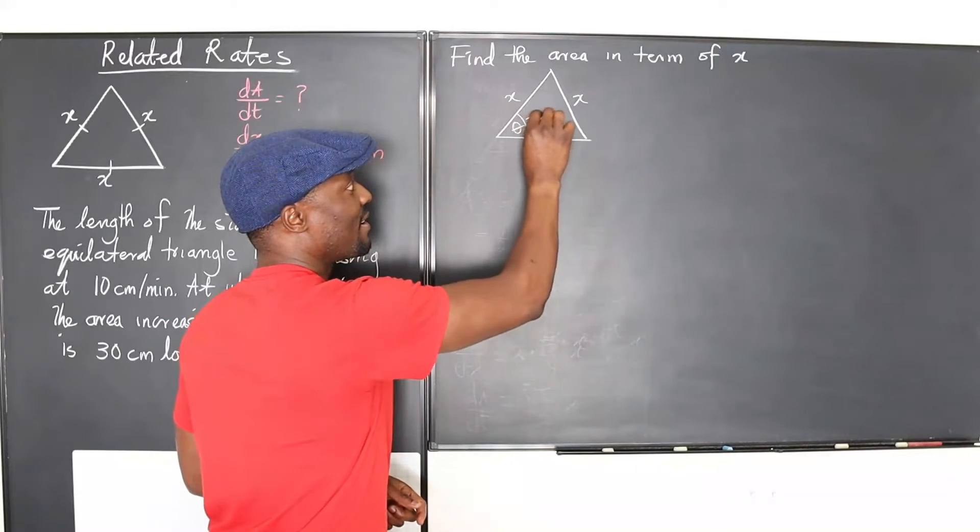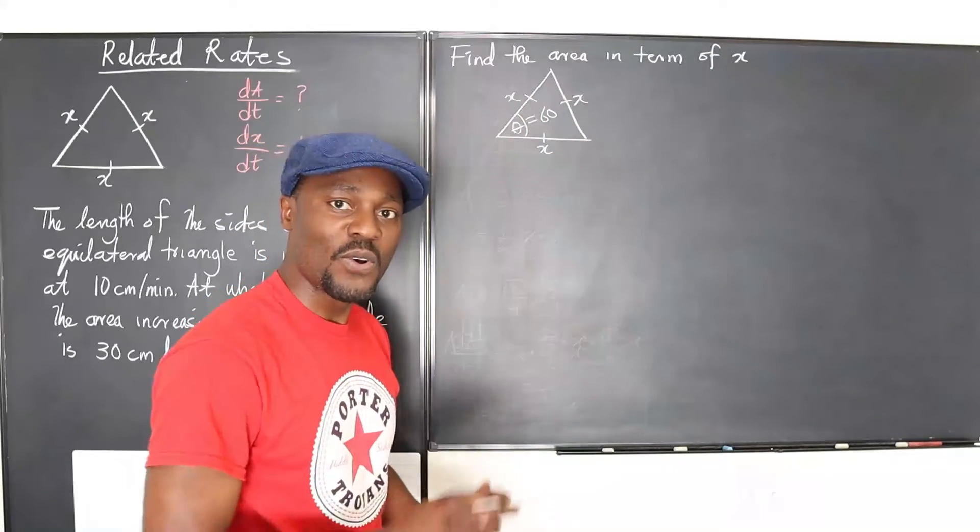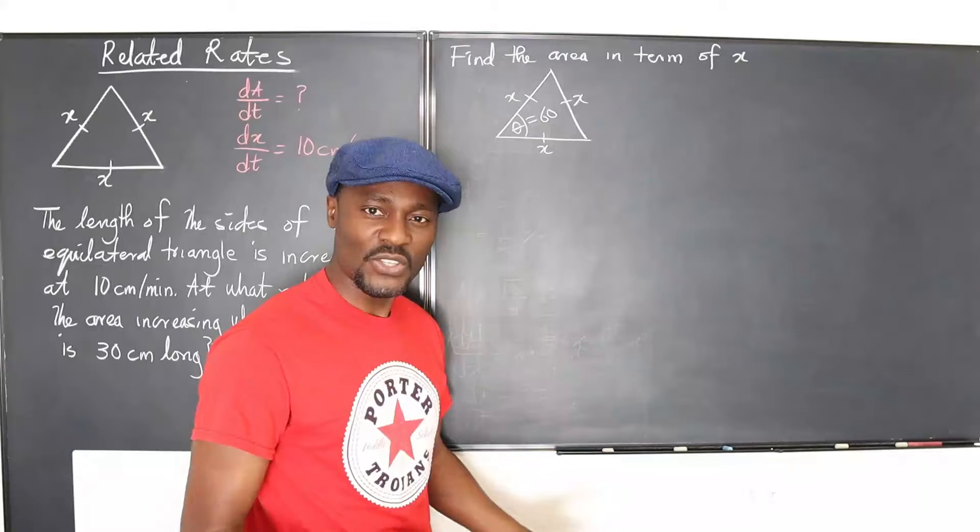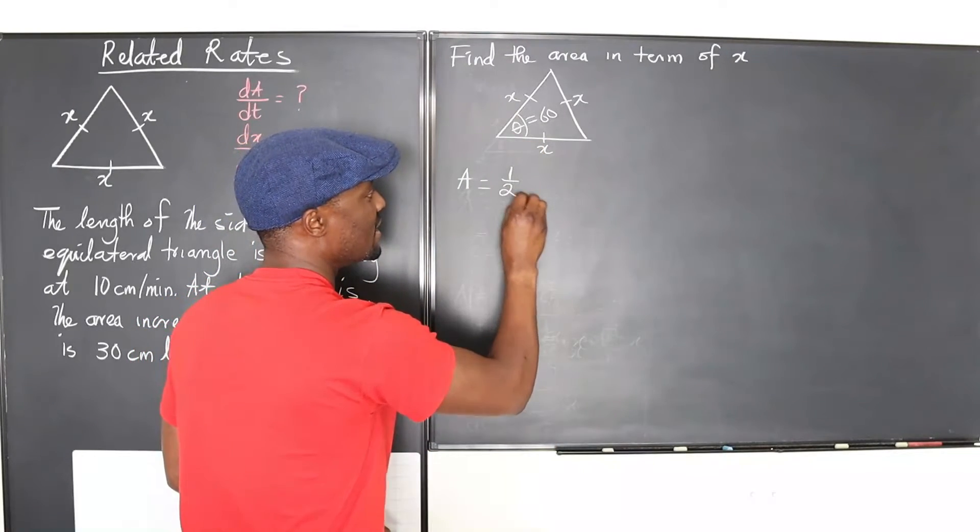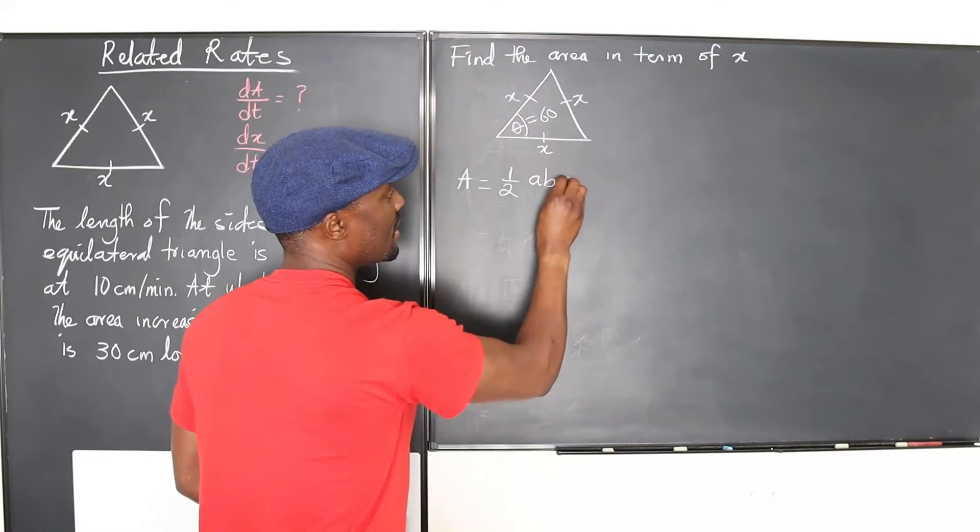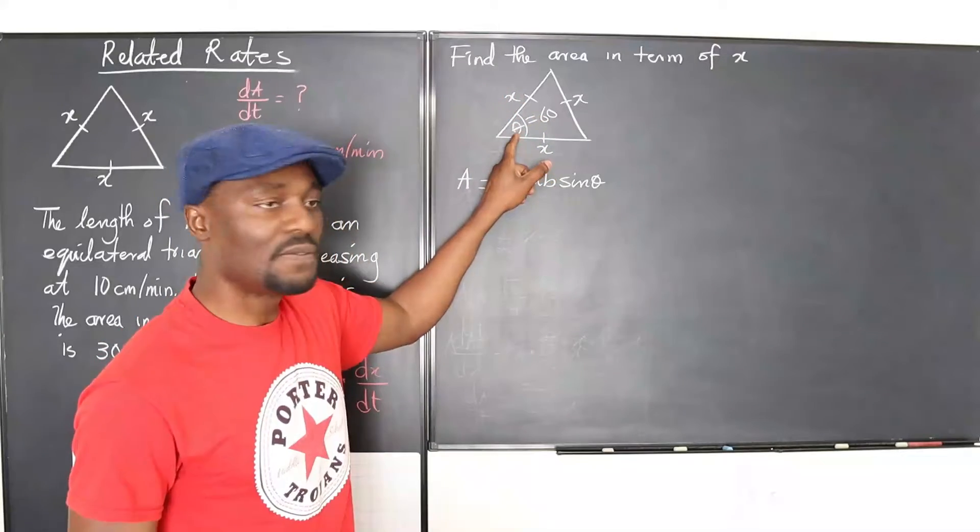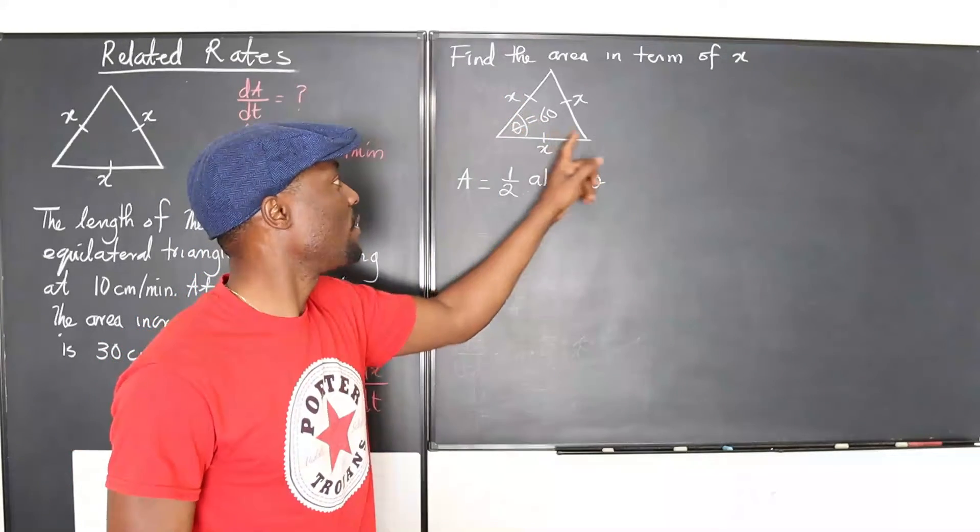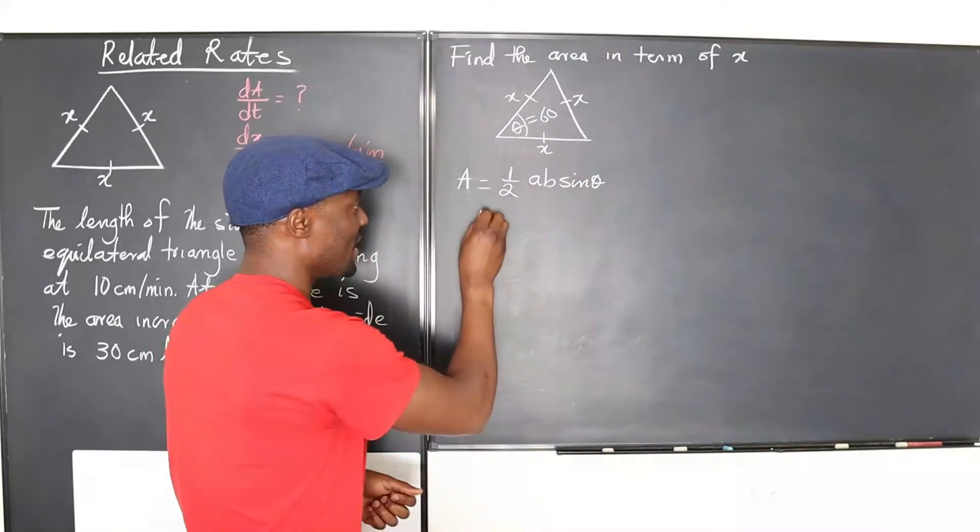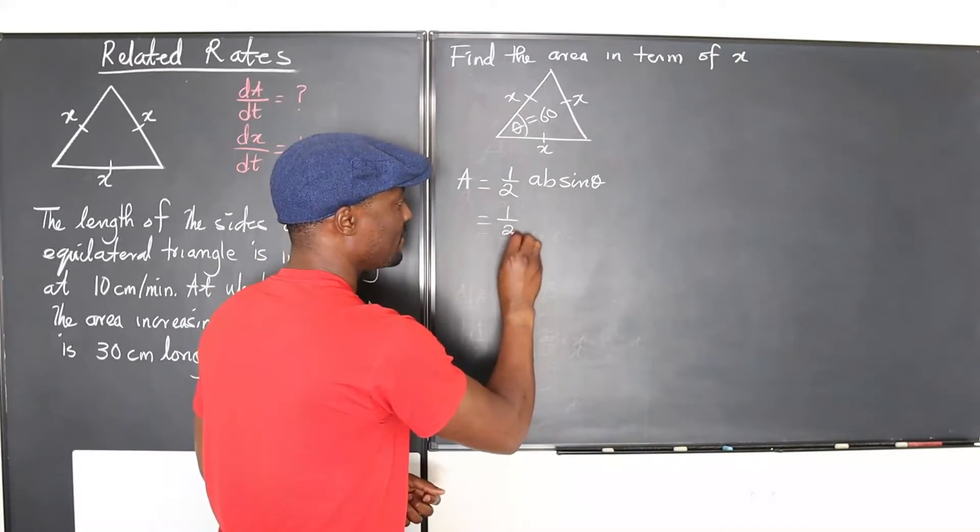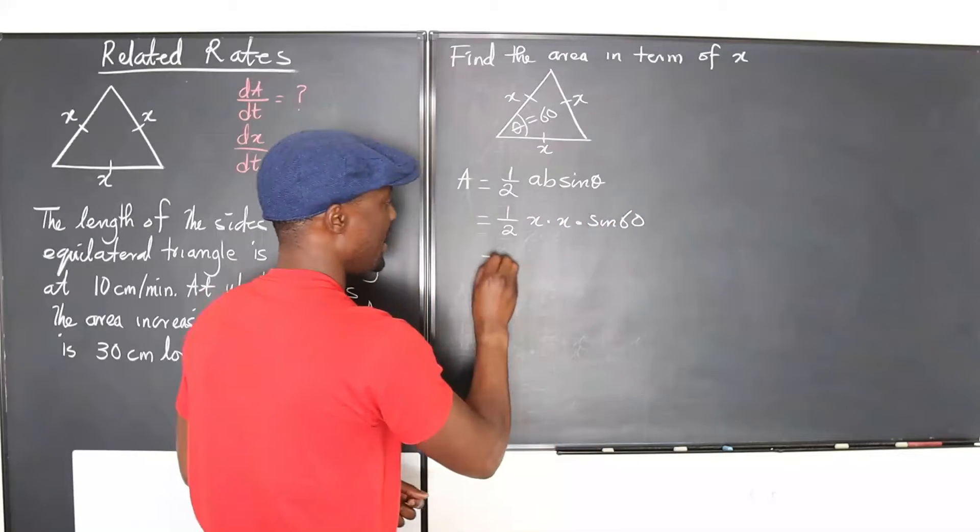So all the angles will be 60 each. Use that and use this other formula that the area of this triangle is half AB sine theta, where AB will be the two sides that form sine theta. Well, we know all the thetas are 60 degrees and all the ABs are x and x. So we can conclude that this is one half of x times x times sine 60 degrees.